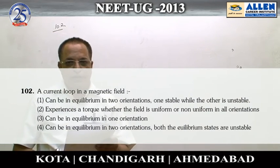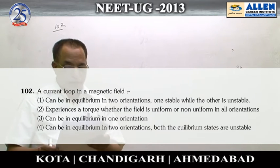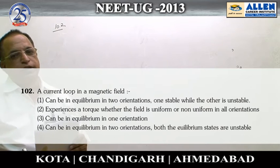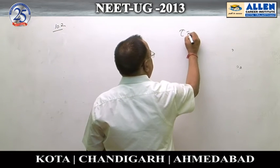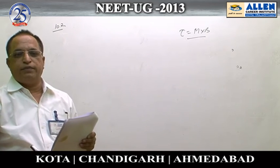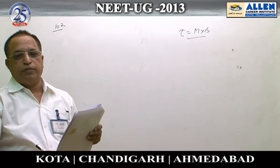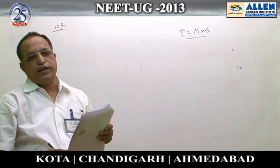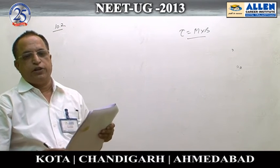This problem is related to the presence of a current loop in a magnetic field. As you know, when we place a current loop in a uniform magnetic field, the net force is always zero. But it experiences a torque, and torque is given by the relation τ = m × B. When m vector and B vector are in the same direction, torque will be zero — that is stable equilibrium. When m and B are in the opposite direction, torque is again zero — that is unstable equilibrium.